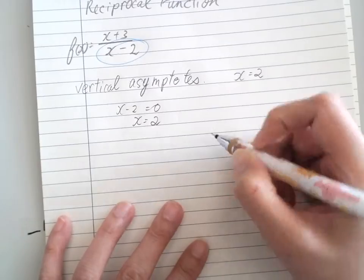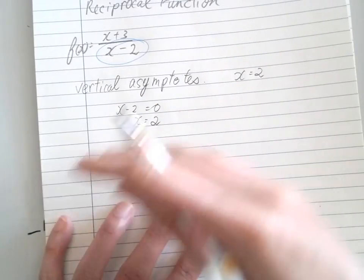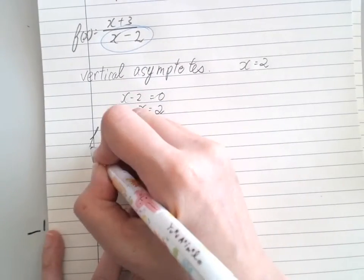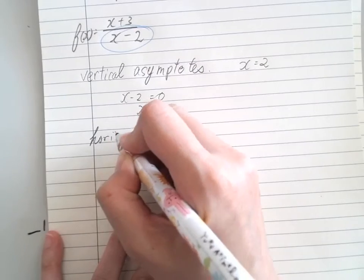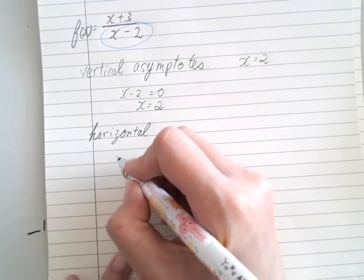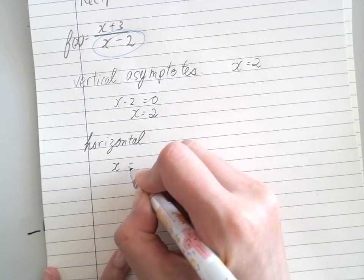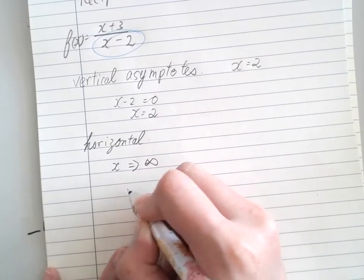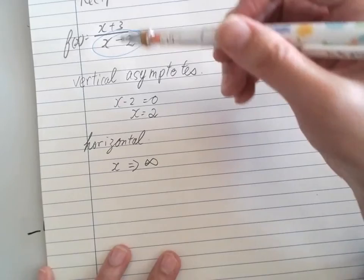For horizontal asymptote, you're thinking: when x tends to become infinity, what will that equal? Think about if x equals a big number, so big that the constants will be ignored.